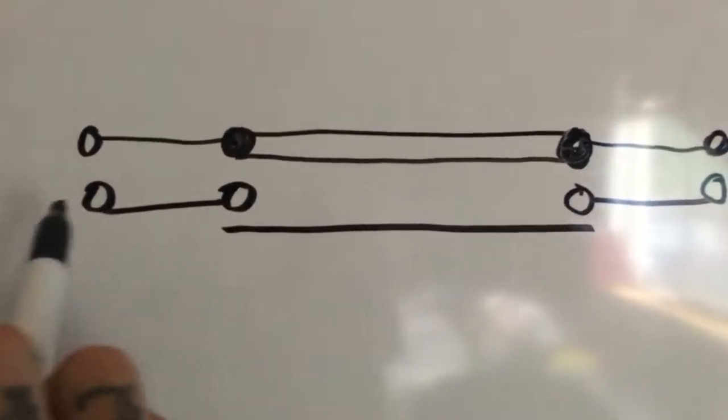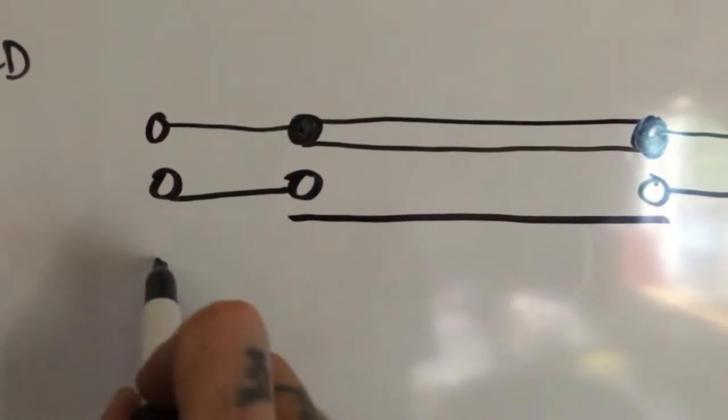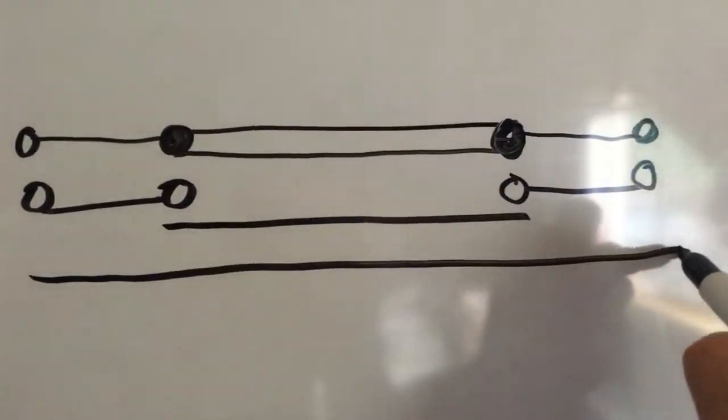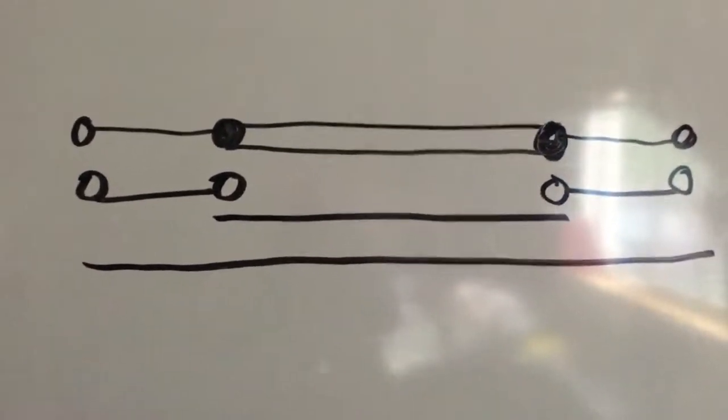You need these to be parallel to one another at ride height, which is the lower control arm should be level to the ground at ride height, optimal ride height, just sitting.